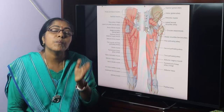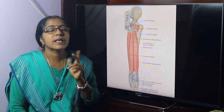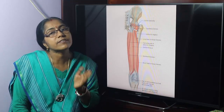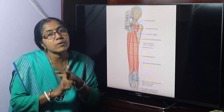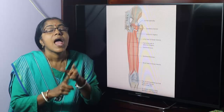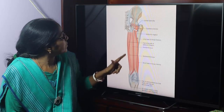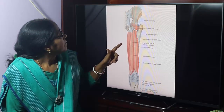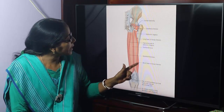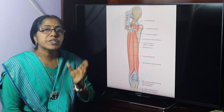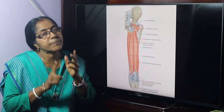The posterior compartment is the flexor compartment. The muscles of the flexor compartment are the hamstring muscles: semi-membranosus, semi-tendinosus, long head of biceps femoris, and the ischial part of the adductor magnus. The short head of the biceps femoris is not a hamstring muscle. The true hamstring muscles are semi-membranosus, semi-tendinosus, long head of biceps femoris, and hamstring part of the adductor magnus.